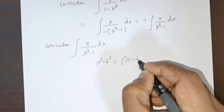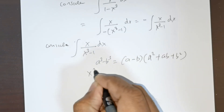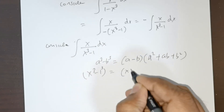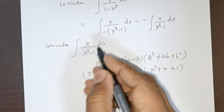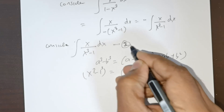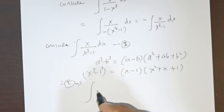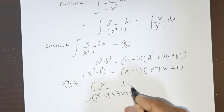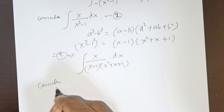The formula a³ minus b³ is written as (a minus b)(a² plus ab plus b²). So x³ minus 1 equals (x minus 1)(x² plus x plus 1). Therefore I can rewrite the denominator x³ minus 1 as (x minus 1)(x² plus x plus 1), with x in the numerator multiplied by dx.